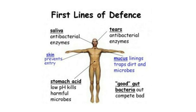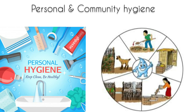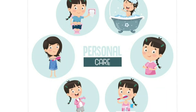Tears wash away germs from the eyes. Mucus lining in the nasal cavity traps germs and purifies the air that is inhaled. Inside the body, white blood cells in the blood attack invading germs. The strong acids in the stomach kill many germs in food, and the skin acts as a barrier and keeps most of the germs outside. Thus the body has a natural defense mechanism to fight against diseases.